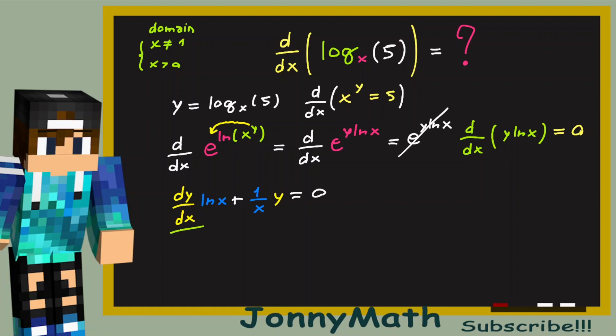Now, we're interested in dy by dx. This is the derivative of this function here. So we just need to isolate this dy by dx. And we're going to do it in the following way. Just bring y over x to the other side of the equation. So we have dy by dx times the natural log of x equals to minus y divided by x. Therefore, dy by dx equals minus y over x times the natural log of x.